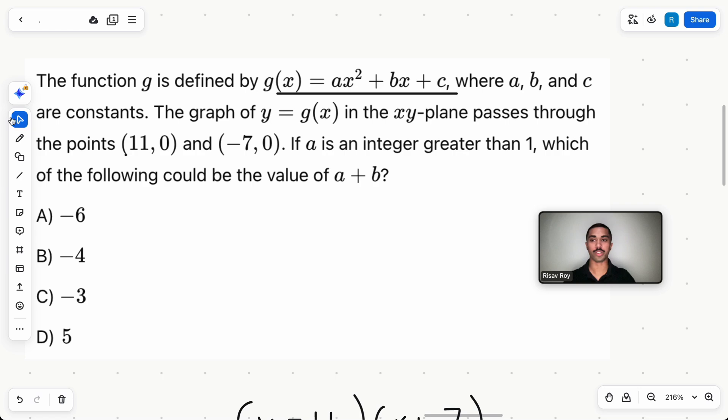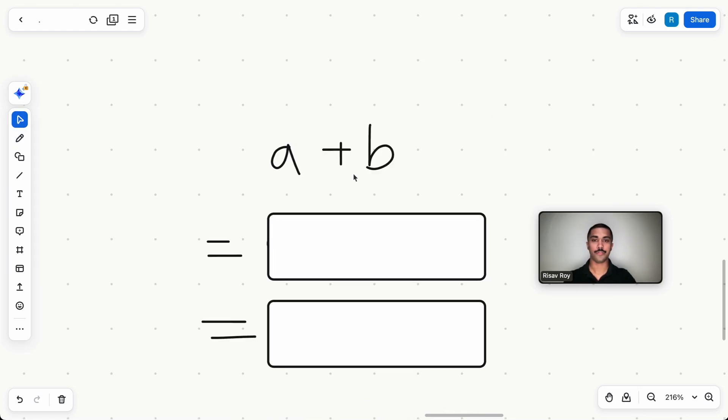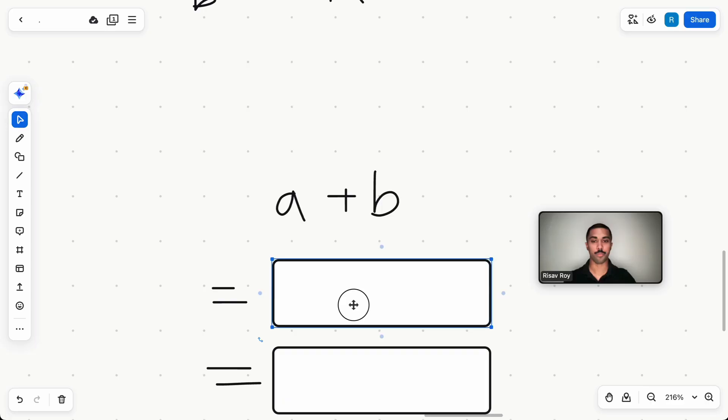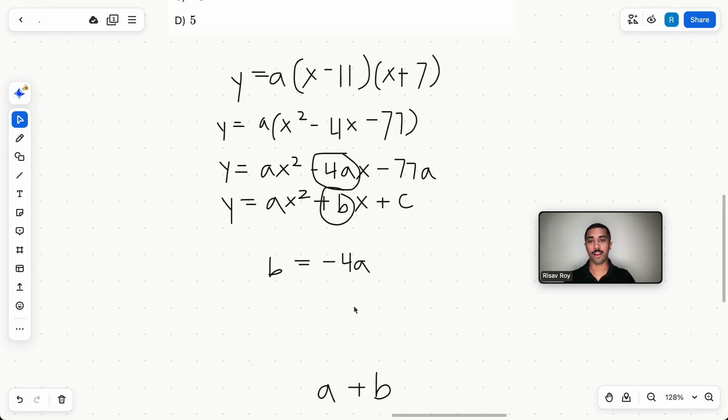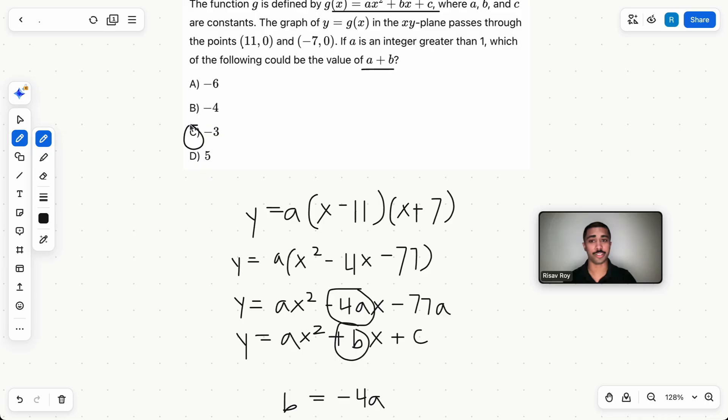Now, if you go back up to the equation, what are we even solving for? a plus b. So if you substitute -4a for b, what we're really solving for is -3a. And right now, if a is one, your answer is C, right? No, it's not. Because a has to be an integer greater than one.